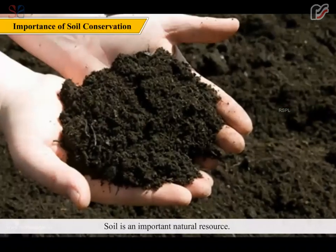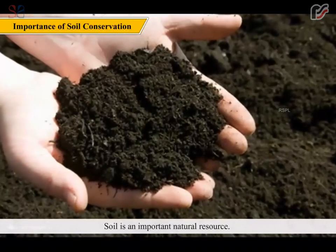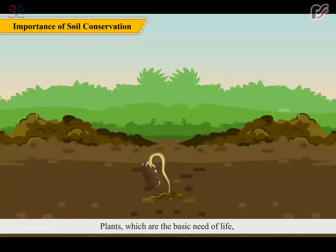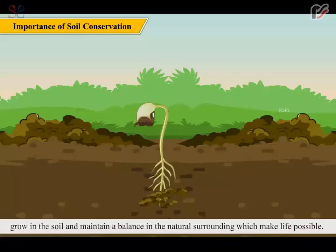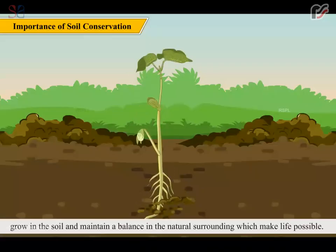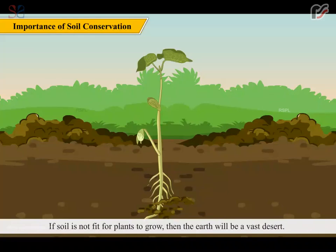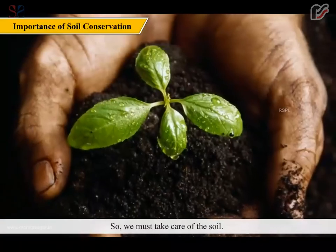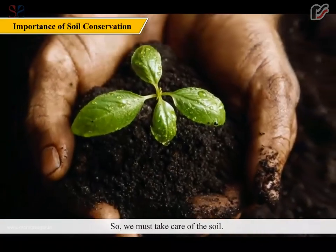Soil is an important natural resource. Plants, which are the basic need of life, grow in the soil and maintain a balance in the natural surroundings which make life possible. If soil is not fit for plants to grow, then the earth will be a vast desert. So we must take care of the soil.